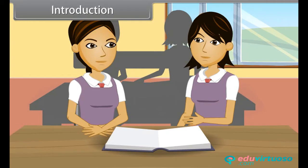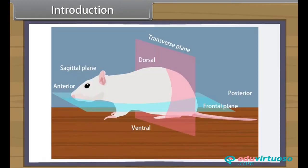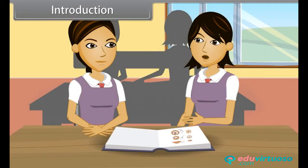On the basis of level of organization, animals either have cellular organization, e.g. sponges, or tissue organization, e.g. coelenterates. According to symmetry, animals are either radially symmetrical, e.g. sponges, coelenterates and echinoderms, or bilaterally symmetrical, e.g. nematodes, arthropods, annelids and vertebrates. And some are asymmetrical, e.g. snails.